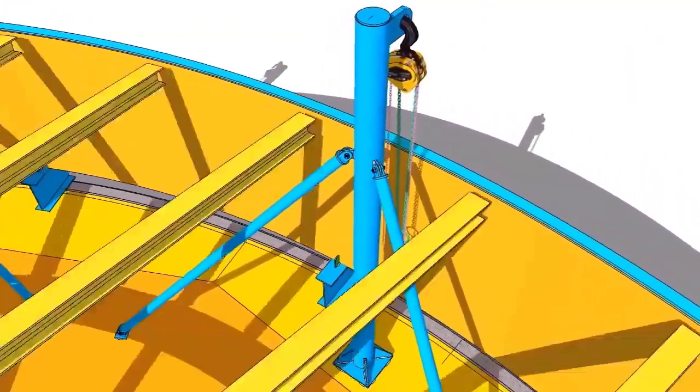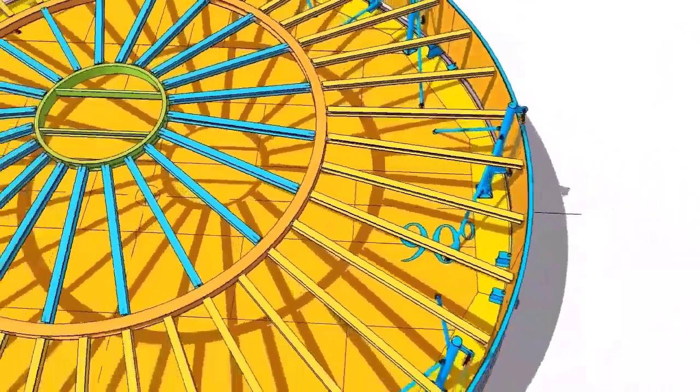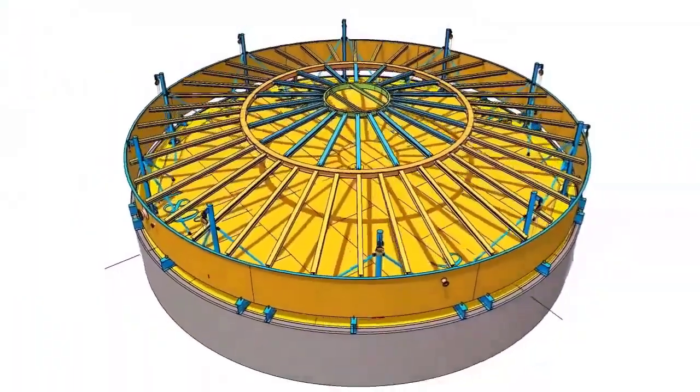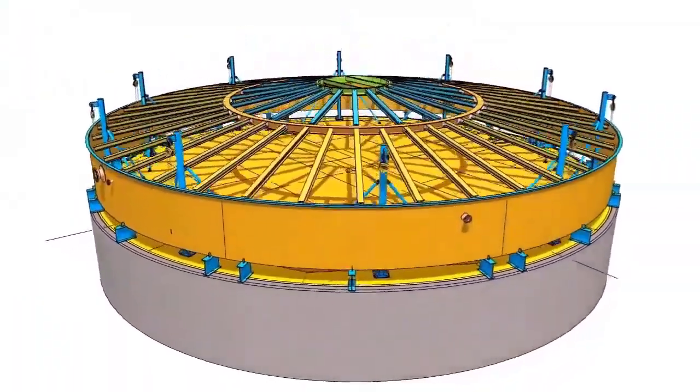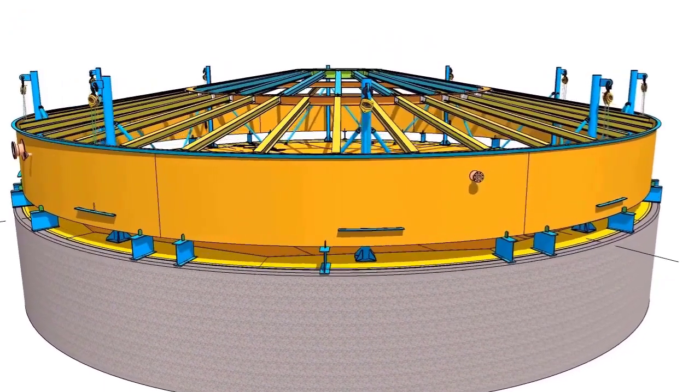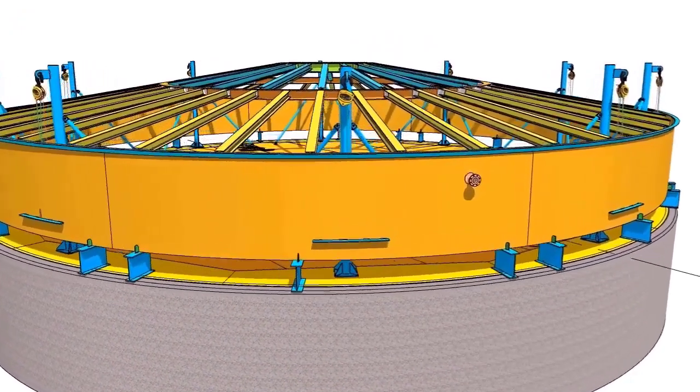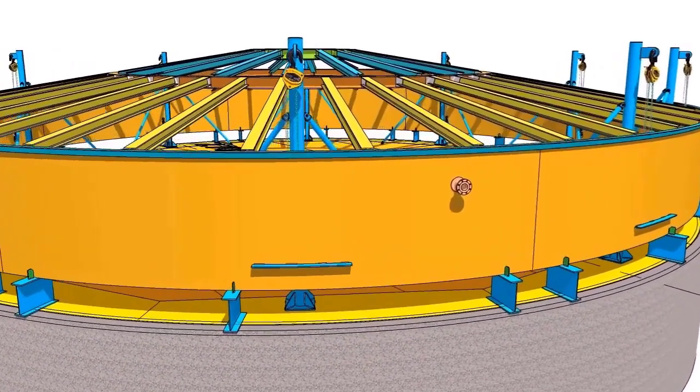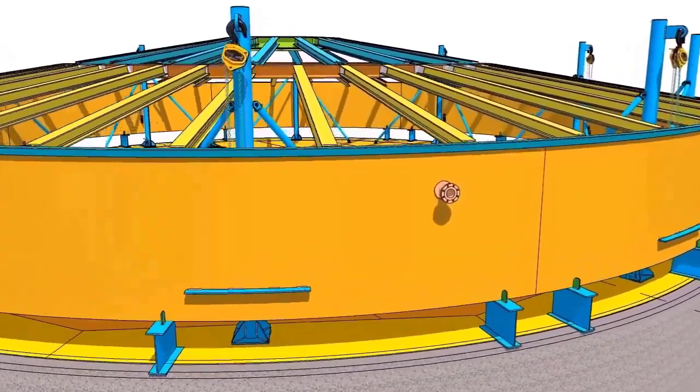Tack weld the lifting hook 300 millimeters above from the bottom of the shell. Install a moon plate outside the shell opposite to the hook. Length of the moon plate shall be 1.2 meters long. The width and thickness are 120 millimeters and 16 millimeters respectively.